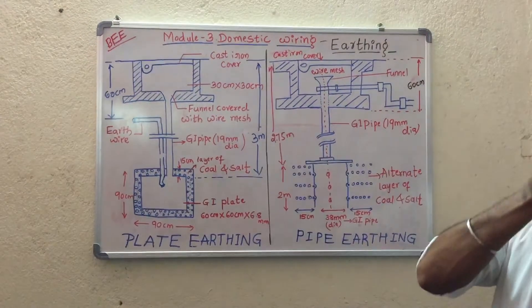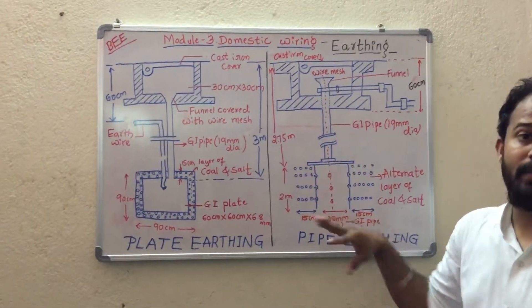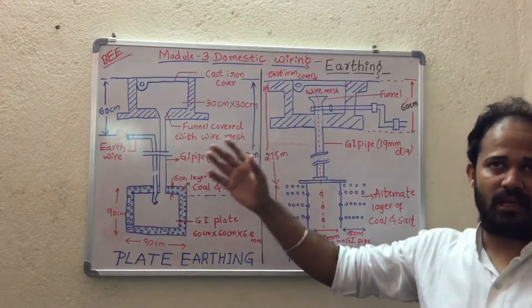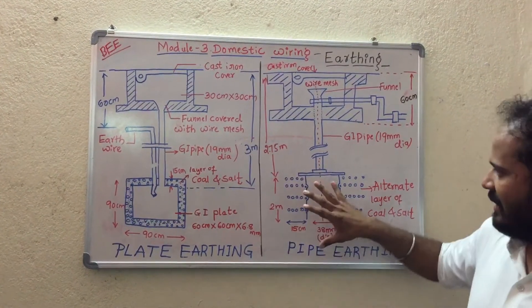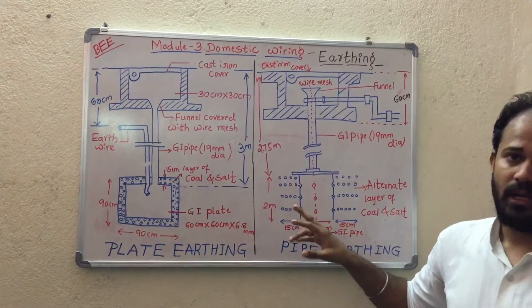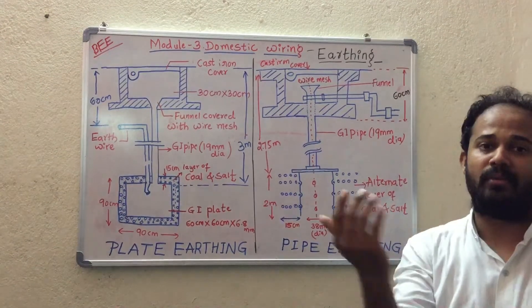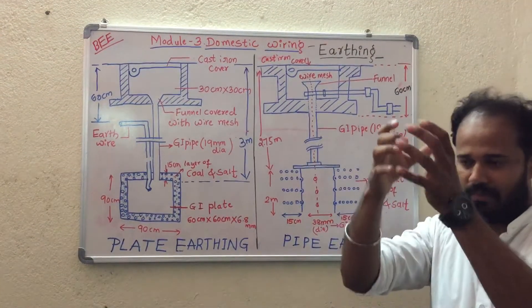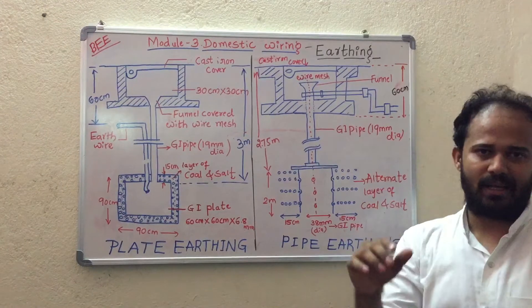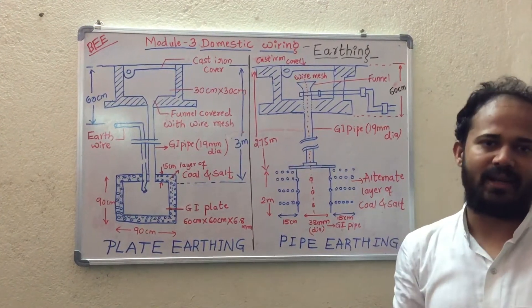The second type of earthing for our syllabus is pipe earthing. It's called pipe earthing because the electrode used here is a pipe, with dimensions of 2 meter length and 38 mm diameter.